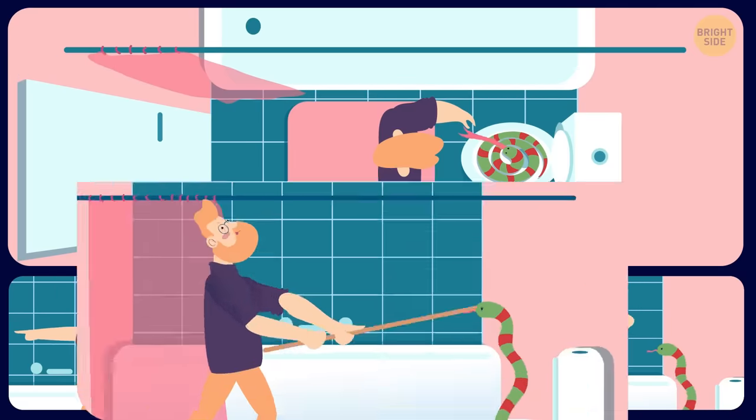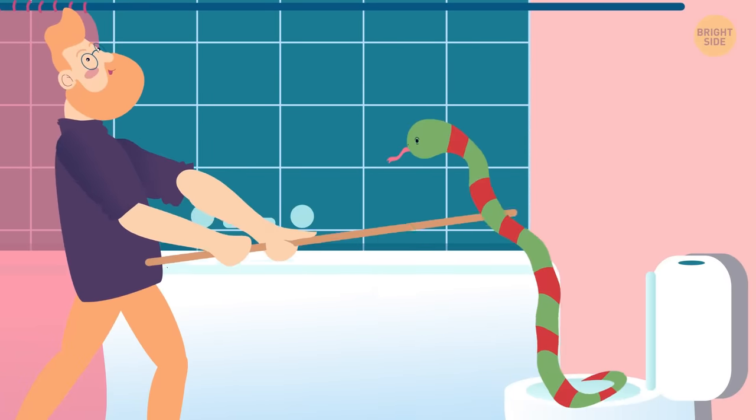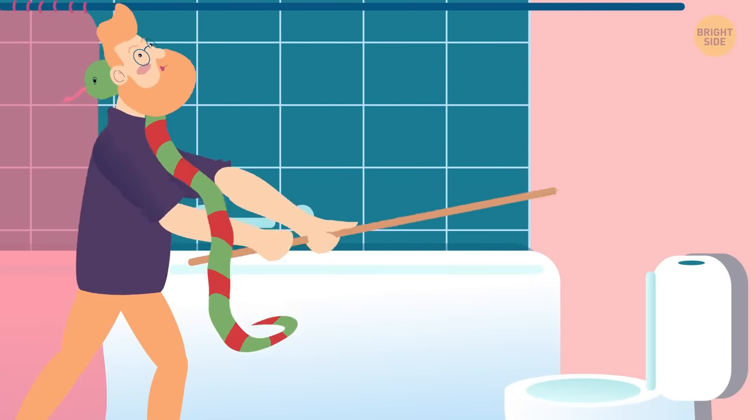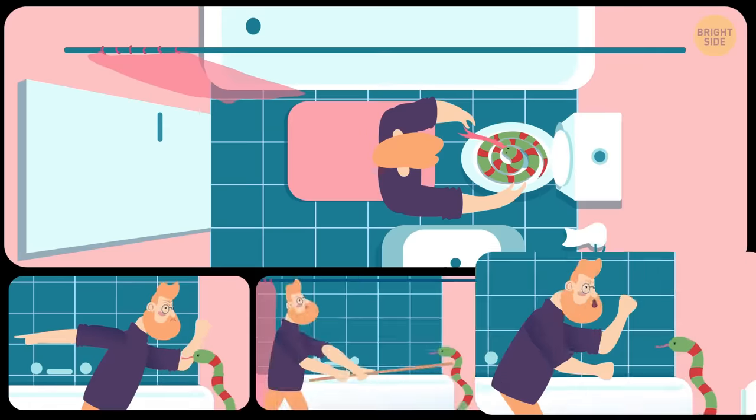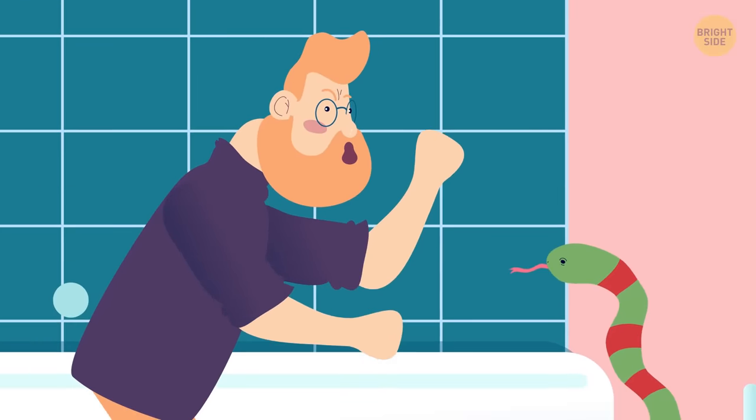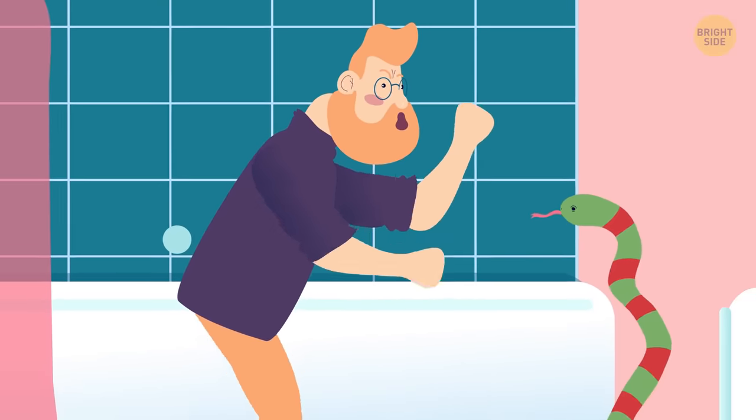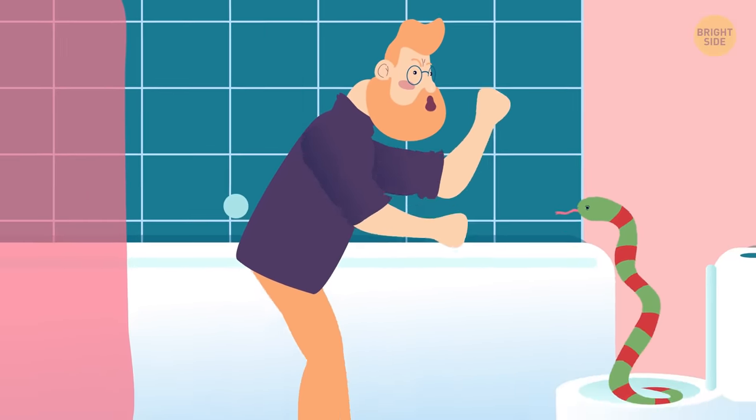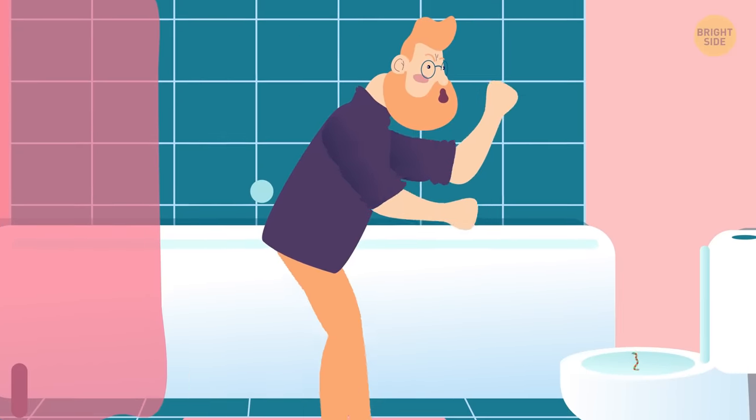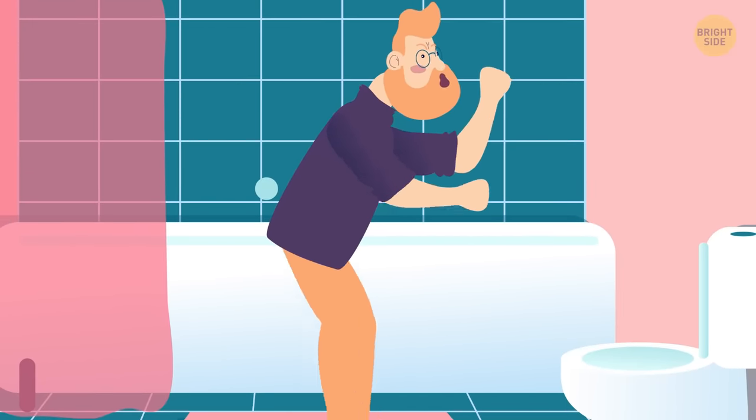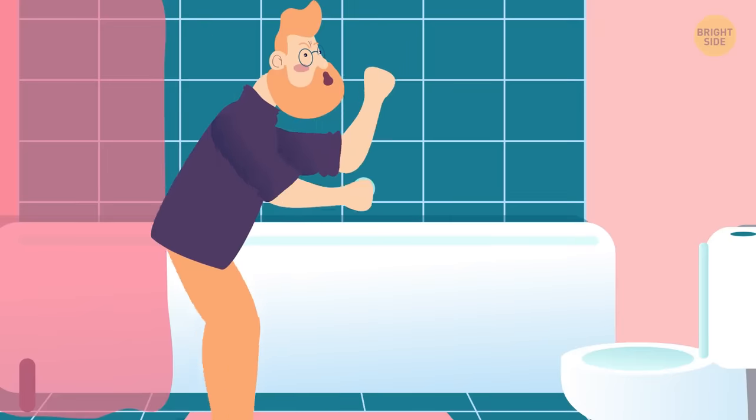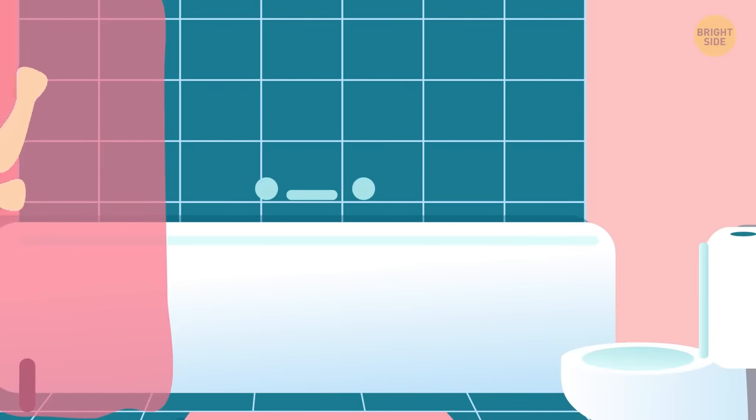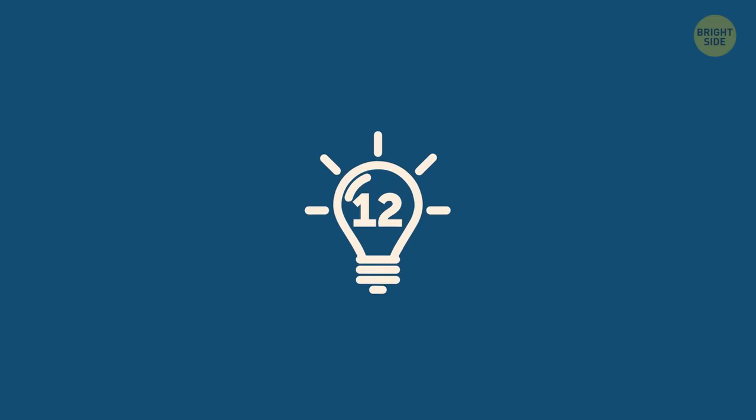If you opted for A or B, the snake might think you're being aggressive and decide to make the first move. The correct answer is C. Even though these reptiles don't have ears, they're sensitive to vibrations. That's why raising your voice, banging two sticks together, or stomping your feet can make a snake retreat. But if there's an opportunity to walk away, use it.